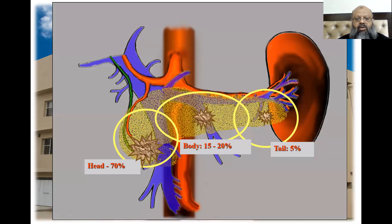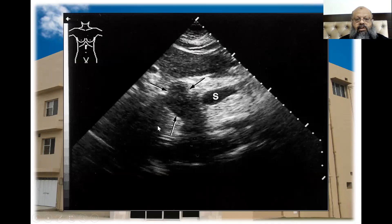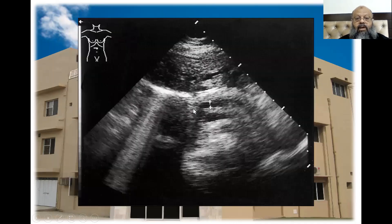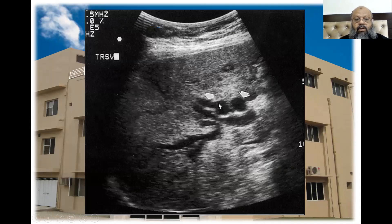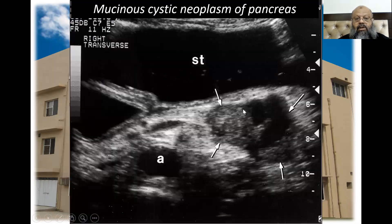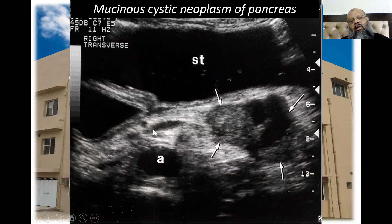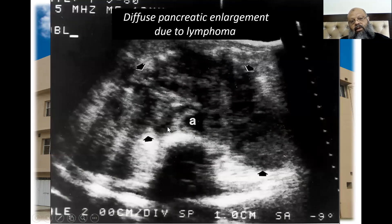Masses of the pancreas can occur at the head, body, or tail — 70% are at the head. This is an example of a mass at the head of the pancreas causing dilatation of the pancreatic duct. You can see the ductal system is disturbed due to it. Here is the stomach, and then we can see a mass with necrotic areas causing dilatation of the pancreatic duct.